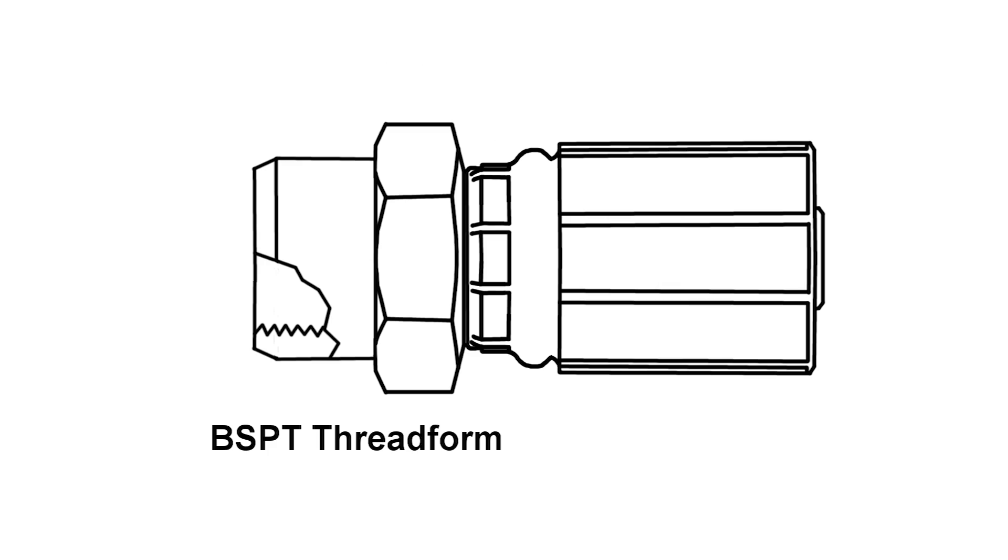BSP-T, a tapered version of a BSP fitting, has no sealing cone but is formed in the same way as a standard BSP thread.